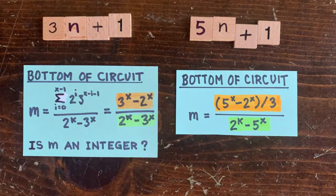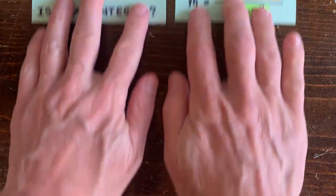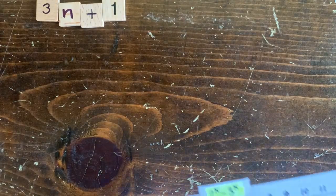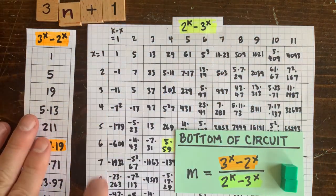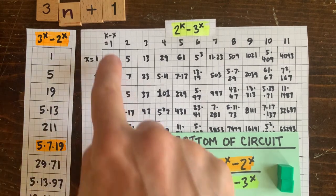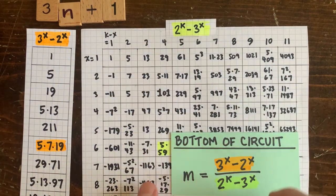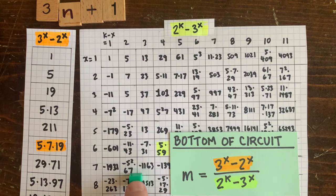So here's our old numerological chart for the 3n plus 1 circuit loops. Down the left is x, the number of up moves in the circuit. And across the top is k minus x, the number of down moves. Inside the chart, we have the denominator.